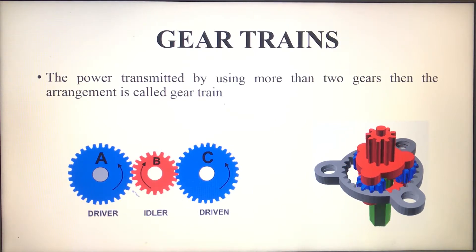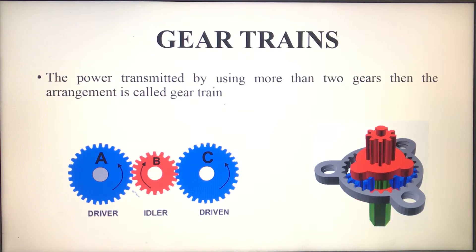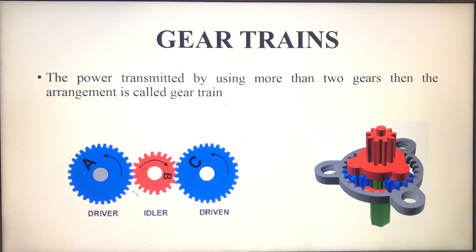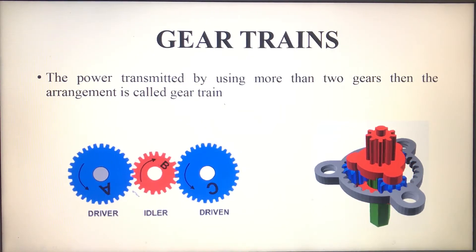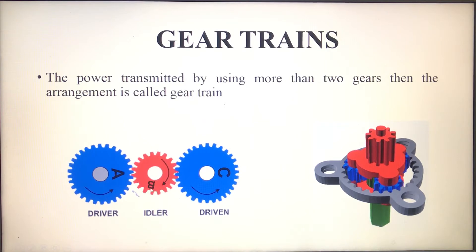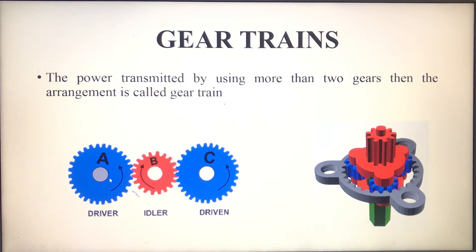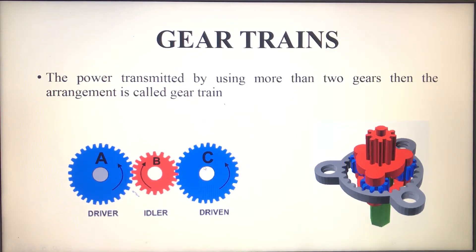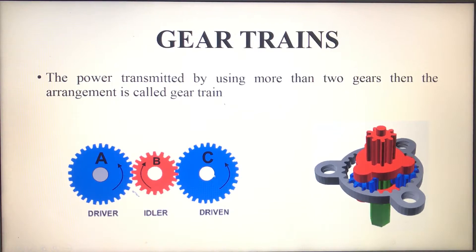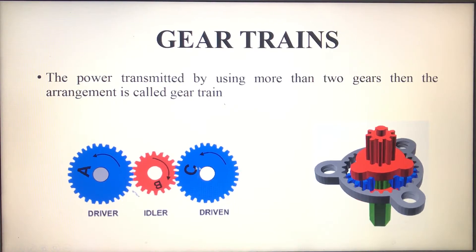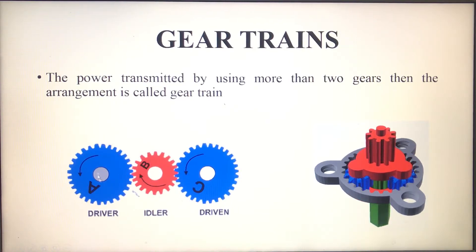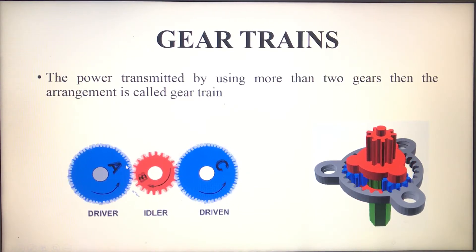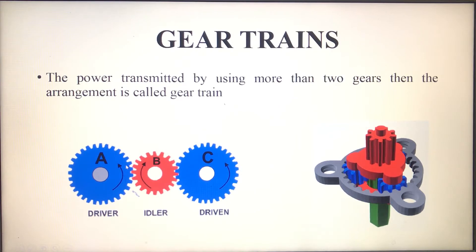If you are using more than two gears to transmit power from one shaft to another shaft, then the arrangement is called as gear train. For example, here you are having three shafts to transmit power from shaft A to shaft C, you are using three gears. This kind of arrangement is called as gear train.